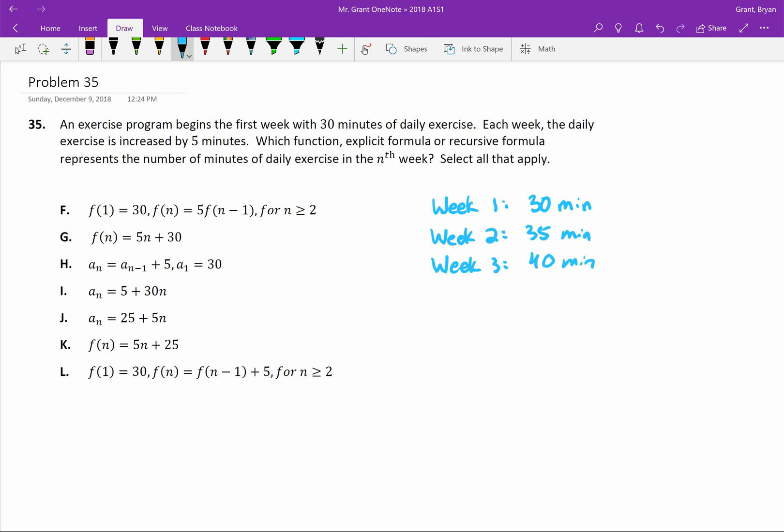If you wanted to describe this to a friend, you would say that each week our amount of exercise is increasing by 5 minutes. When we talk about how those values are changing, that's most commonly known as our slope. Our slope measures the rate of change. In this case, 5 is going to be the slope.